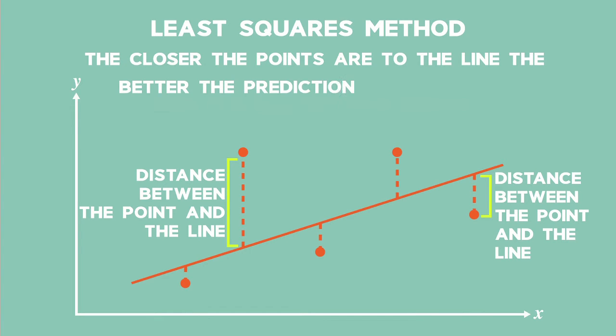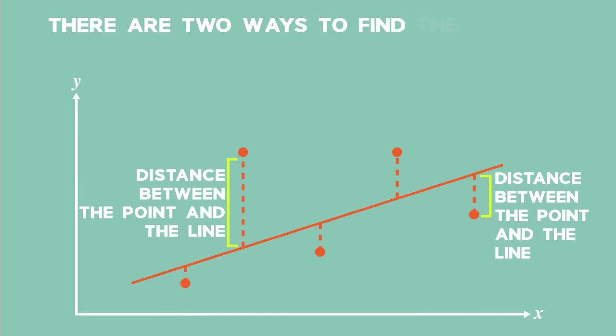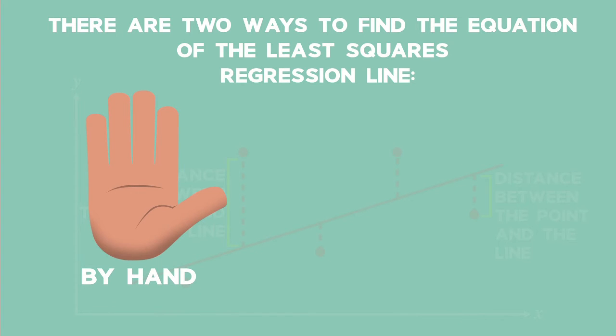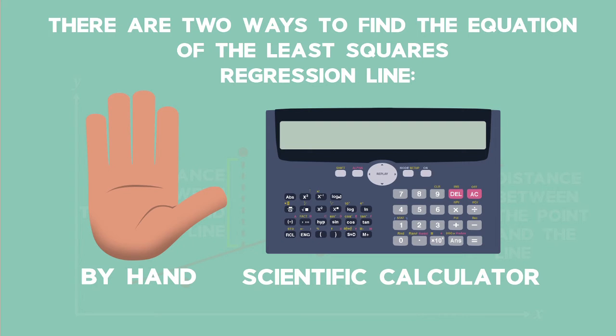The closer the points are to the line, the better the predictions we can make. There are two ways to find the equation of the least squares regression line, by hand or using a scientific calculator. Make sure you understand both methods.